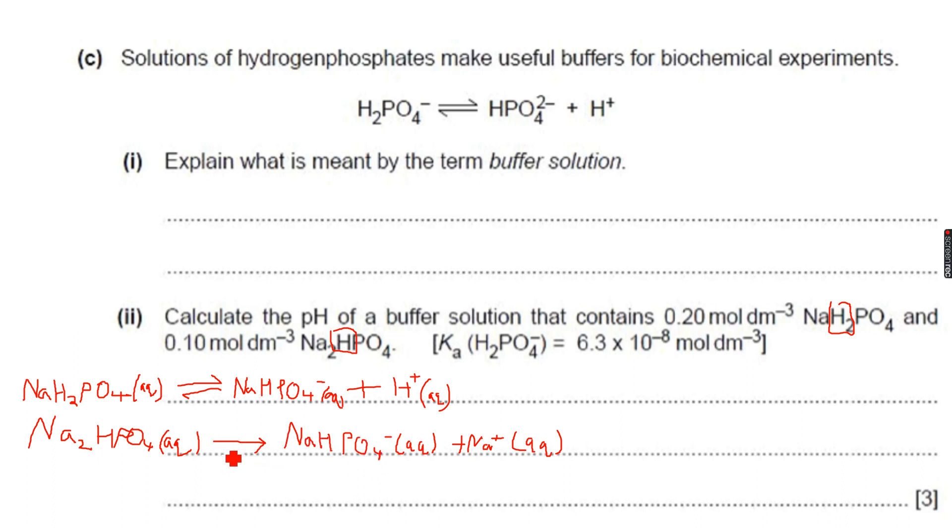I have 0.2 mole per dm³ of the acid and I have 0.1 mole per dm³ of the salt. So if I have 0.1 mole per dm³ of this, then I have 0.1 mole per dm³ of this and 0.1 mole per dm³ of this.